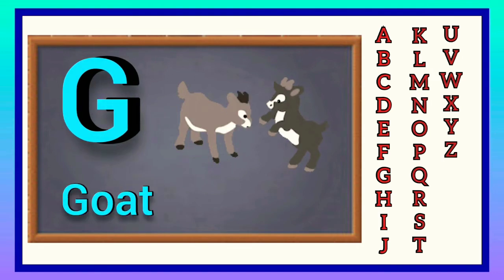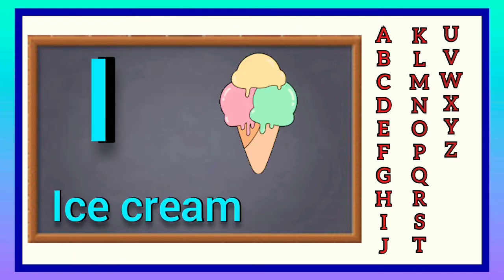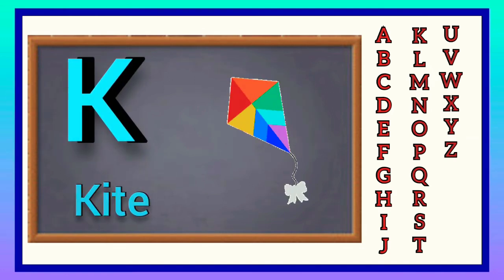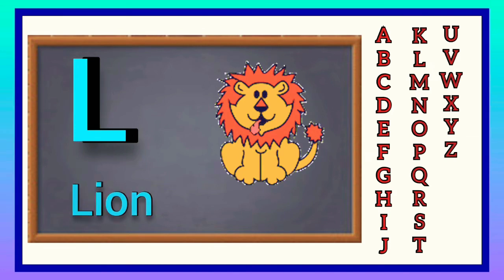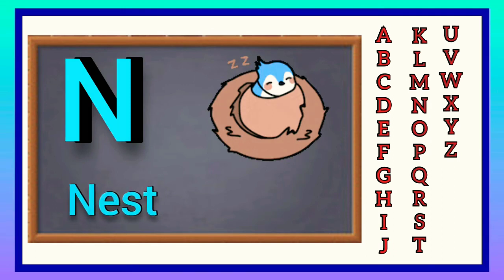G for goat, H for hen, I for ice cream, J for jug, K for kite, L for lion, M for monkey, N for nest.